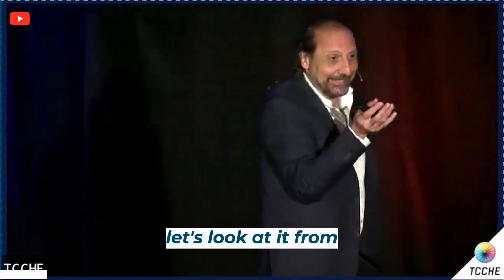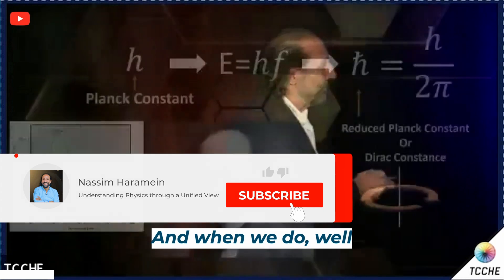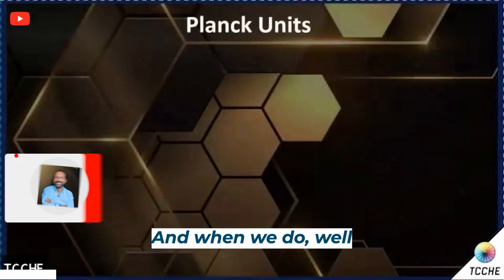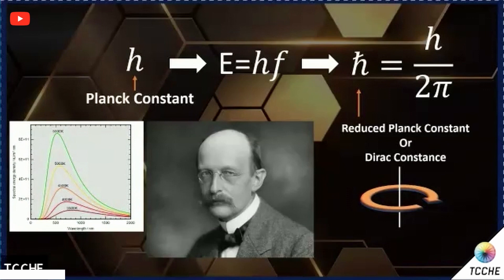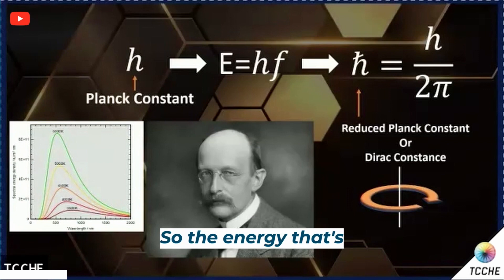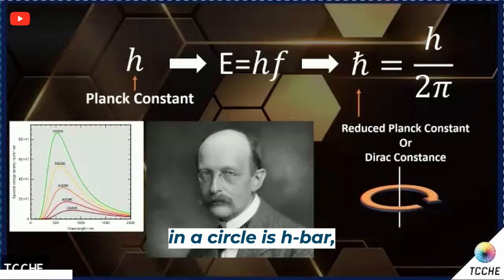Let's look at it from the mechanical perspective. When we do — this two pi is a circle, right? It's called the direct constant. So the energy that's going in a circle — h-bar — is Planck's constant.